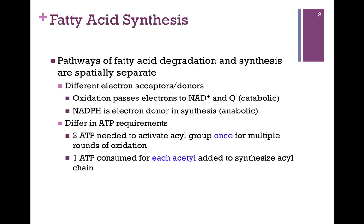We also find that there are different electron acceptors and donors in catabolism versus anabolism, as we would expect. In beta-oxidation, we passed electrons to NAD+ and Q — that's a catabolic pathway. In fatty acid synthesis, NADPH is our electron donor because this is an anabolic pathway. They also differ in terms of ATP requirements. It cost two ATP equivalents to activate our acyl group in beta-oxidation, but we only had to do that once. In fatty acid synthesis, it's going to cost one ATP for each acetyl unit we add to our growing chain.